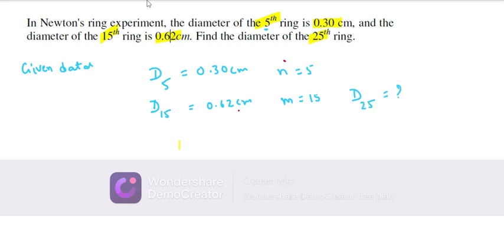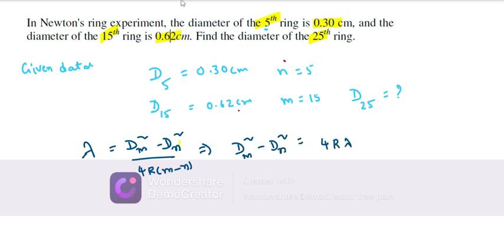For Newton's rings experiment, the formula is: λ = (D_m² - D_n²) / [4R(m-n)], where λ is wavelength, R is radius of curvature, and m, n are ring numbers.